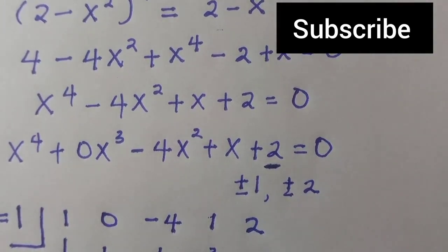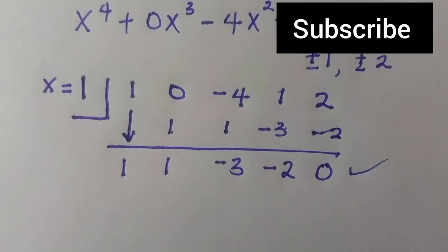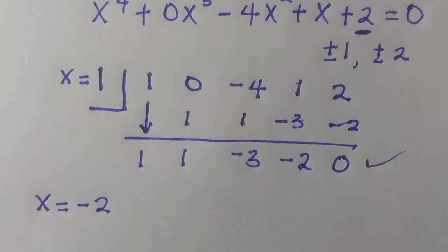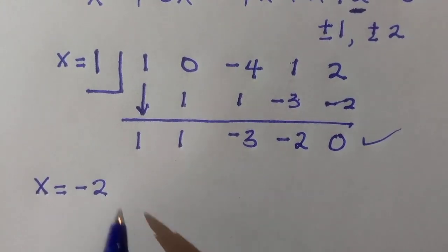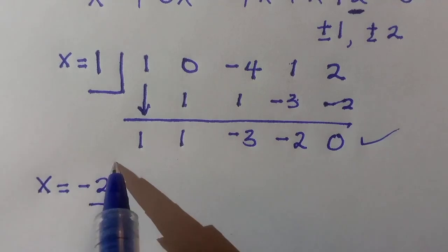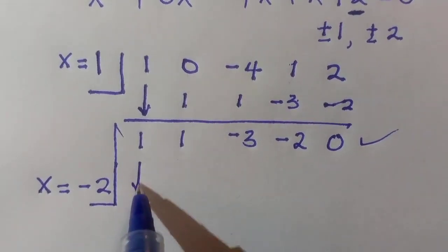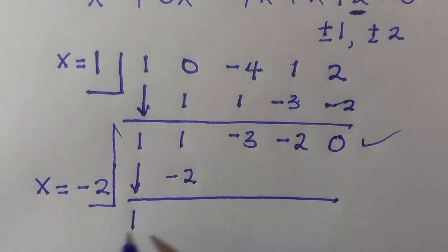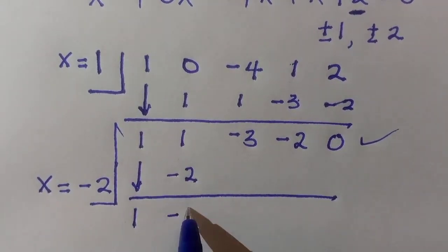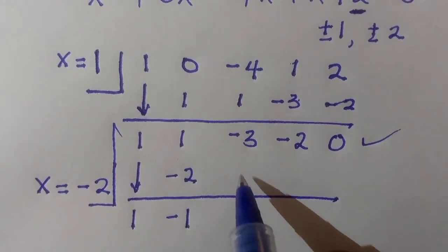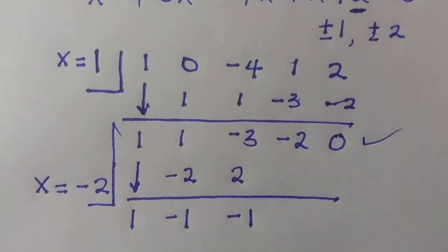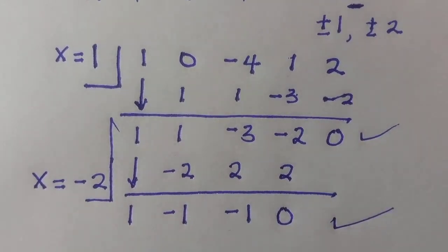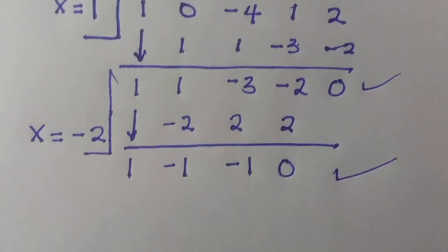We now test the other root, x equals minus 2, which also satisfies this. For the cubic, we rewrite the first term as 1; minus 2 multiplied by 1 is minus 2; then 1 minus 2 is minus 1. Minus 2 multiplied by minus 1 gives 2; minus 3 plus 2 is minus 1. Then minus 2 multiplied by minus 2 is plus 2, giving 0 again, confirming this method is correct.